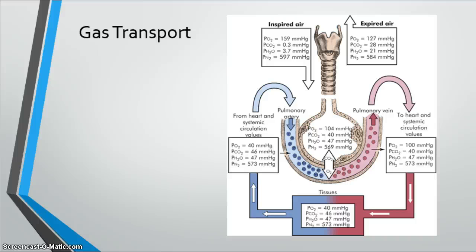Gas transport is the delivery of oxygen to the cells and removal of carbon dioxide. It involves four steps: ventilation of the lungs, diffusion of oxygen from the alveoli into capillary blood, perfusion of systemic capillaries with oxygenated blood, and diffusion of oxygen from systemic capillaries to the cells. If any of those steps are impaired, gas exchange at the cellular level will be compromised. Key values to take away include pH, PCO2, and PO2 levels. We'll continue to discuss acid-base balance, respiratory acidosis, and alkalosis. If you have questions about anatomy and physiology of the respiratory tract, please bring them to class.